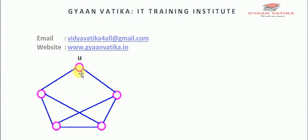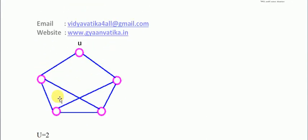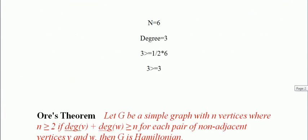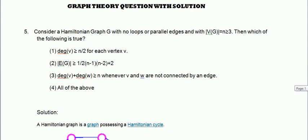We check for each non-adjacent vertex pair. If we check for each vertex, the condition holds true throughout. So this particular graph is Hamiltonian, and option number 3 is also true.